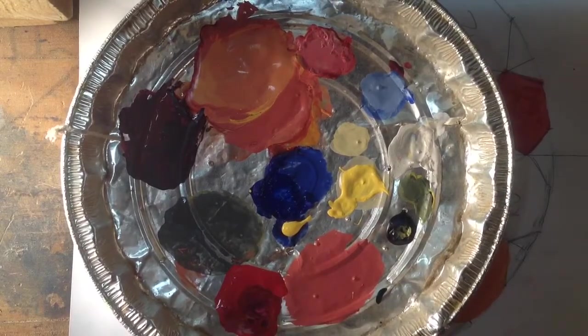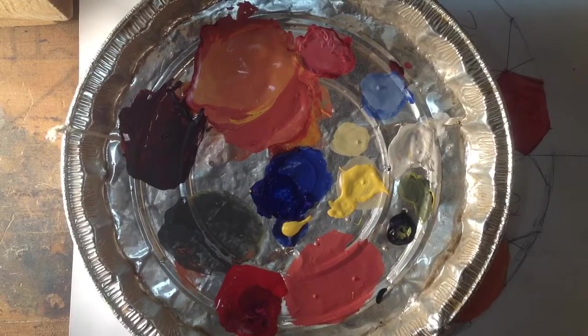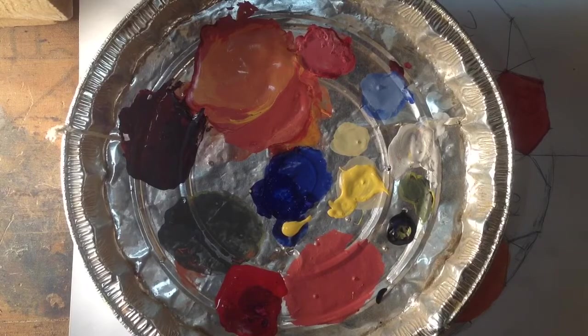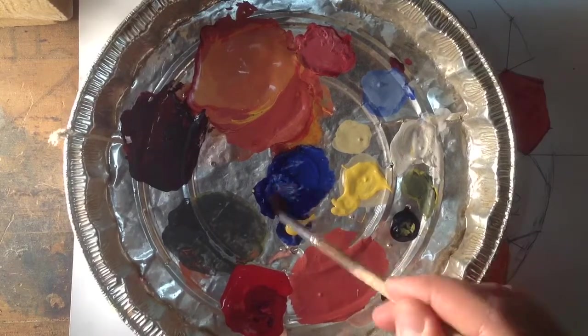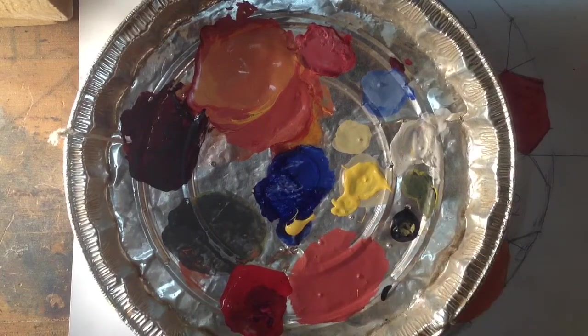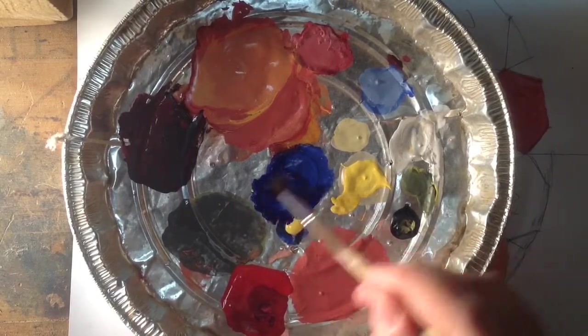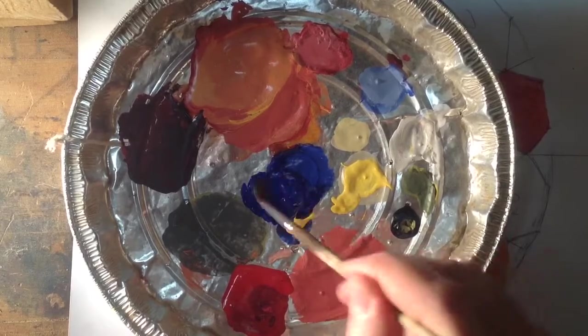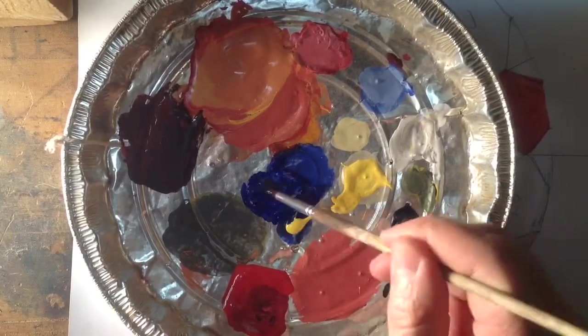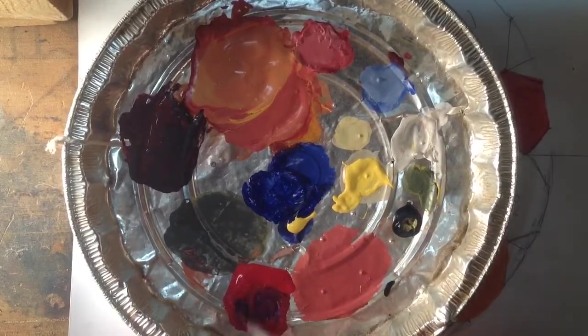And that is making it more of a maroon right now. As I add more blue, it'll hopefully change more violet. Take a little bit of my water and mix it in with my blue to try and loosen it up. It's dry. There we go.